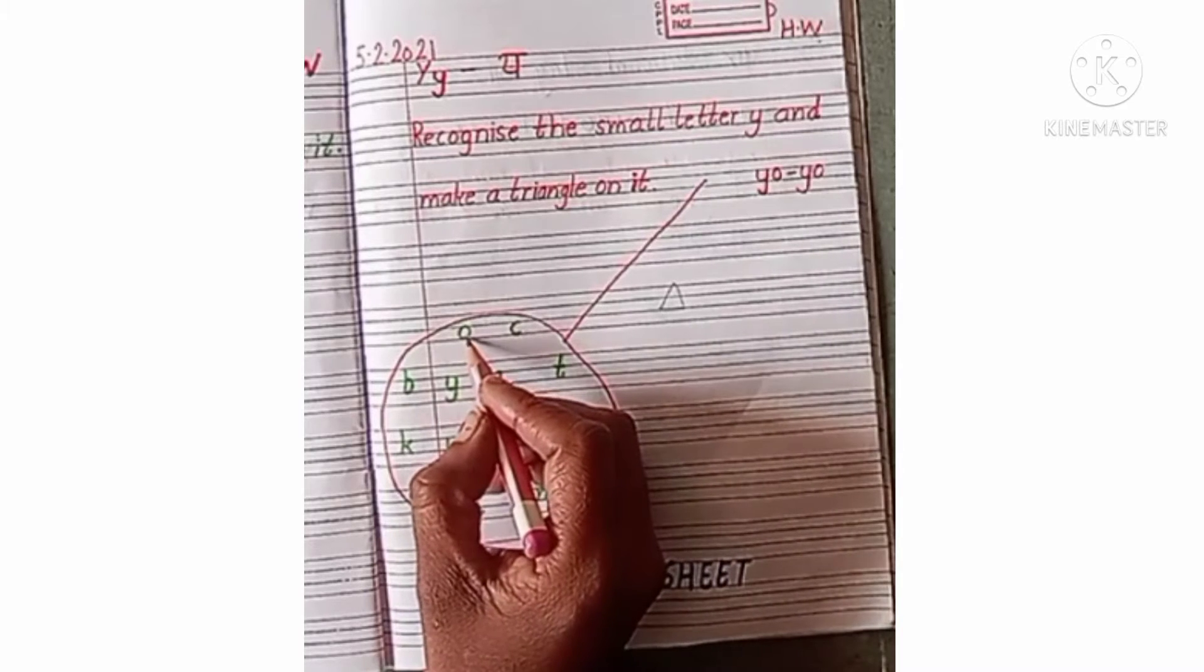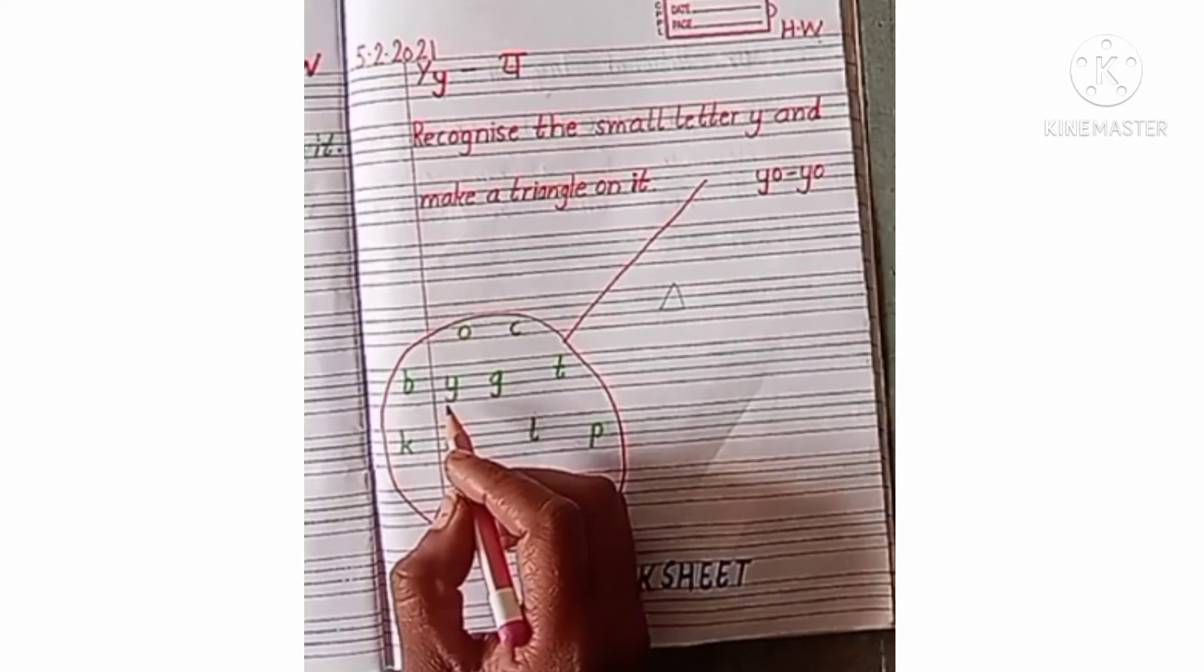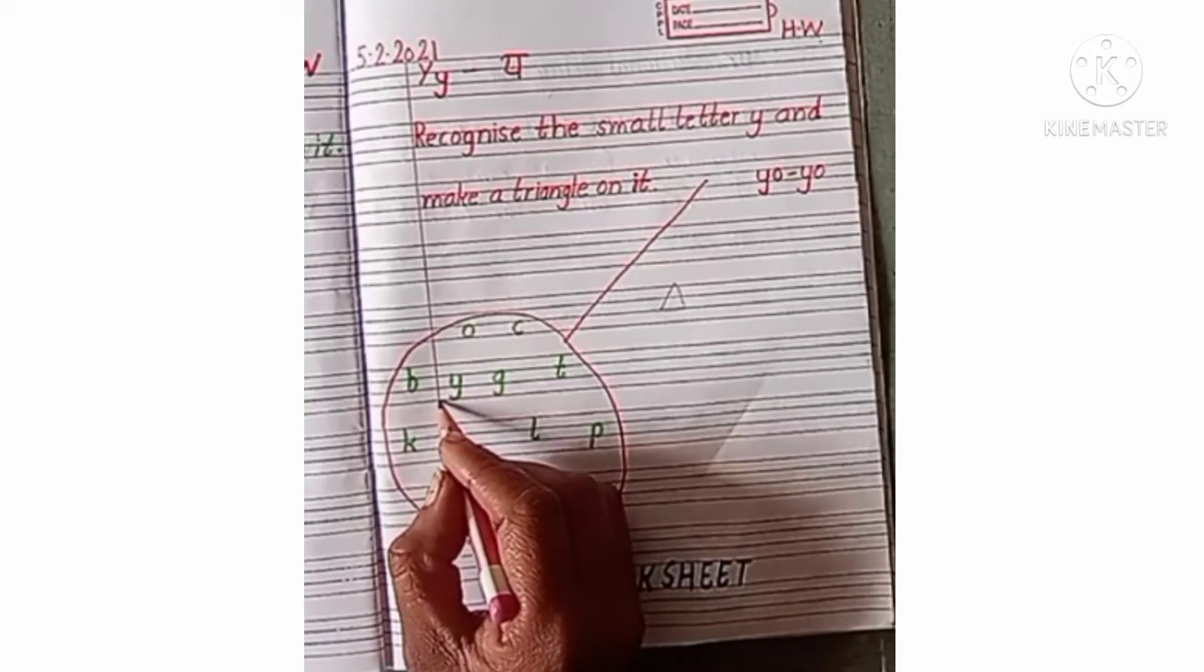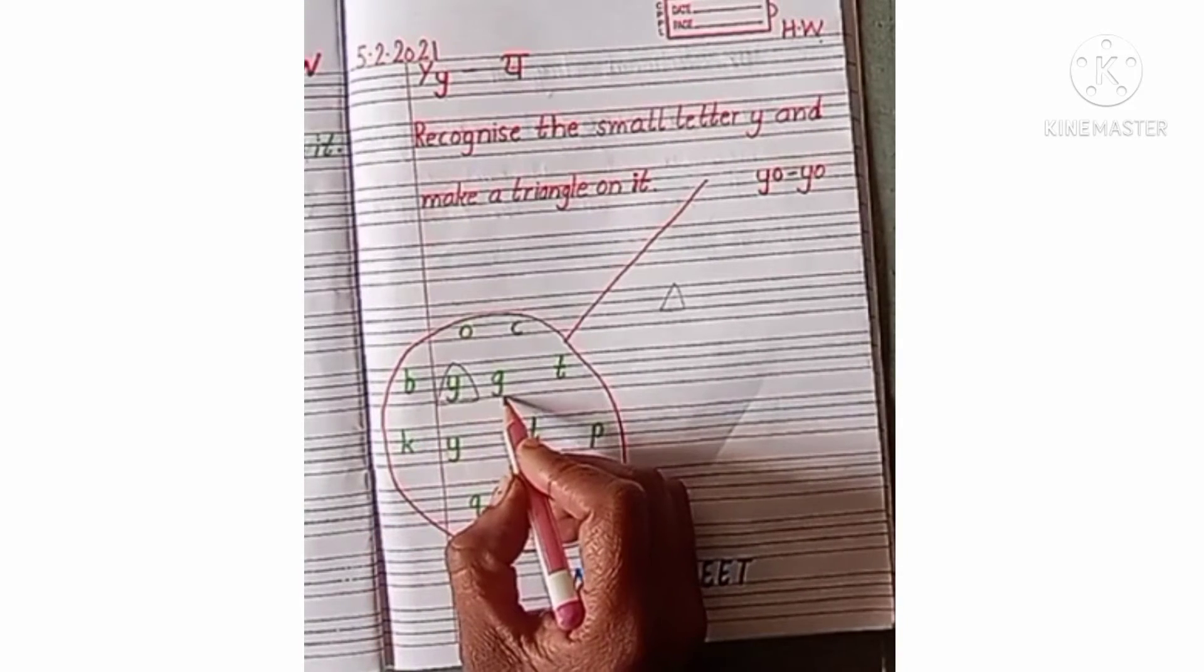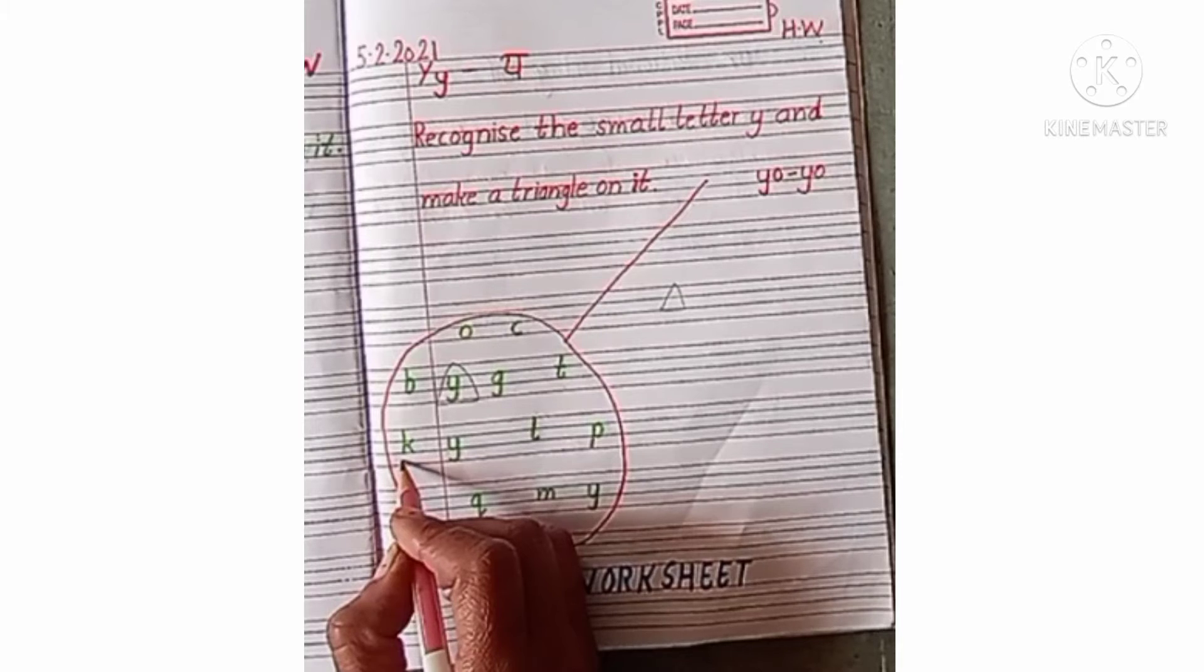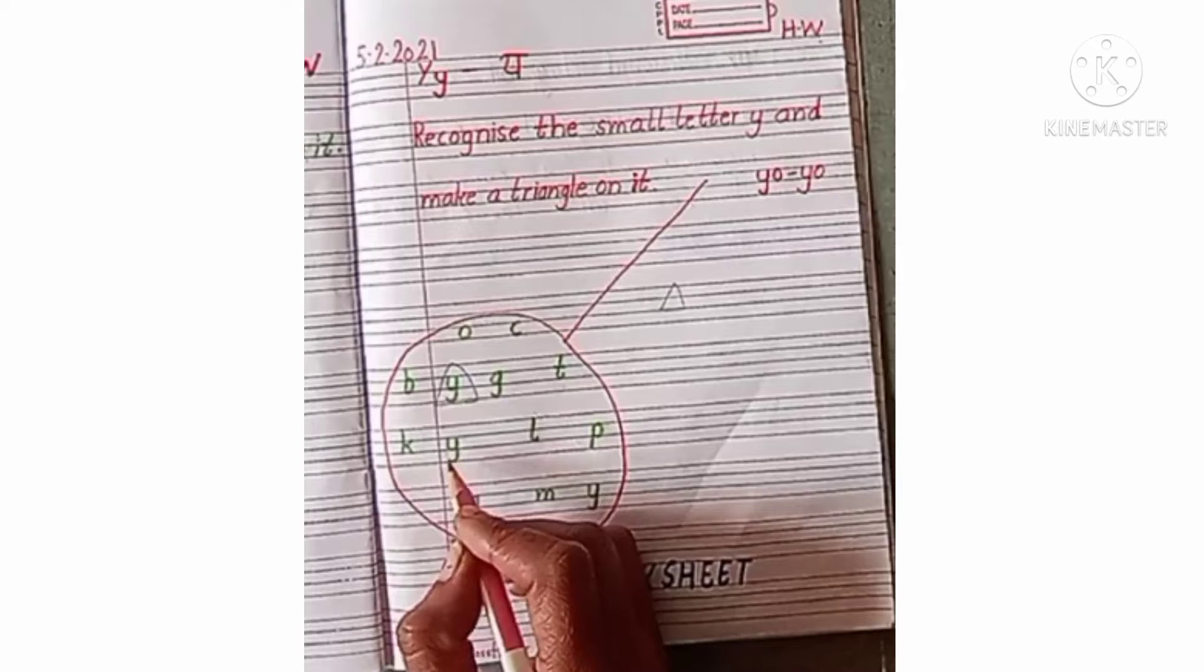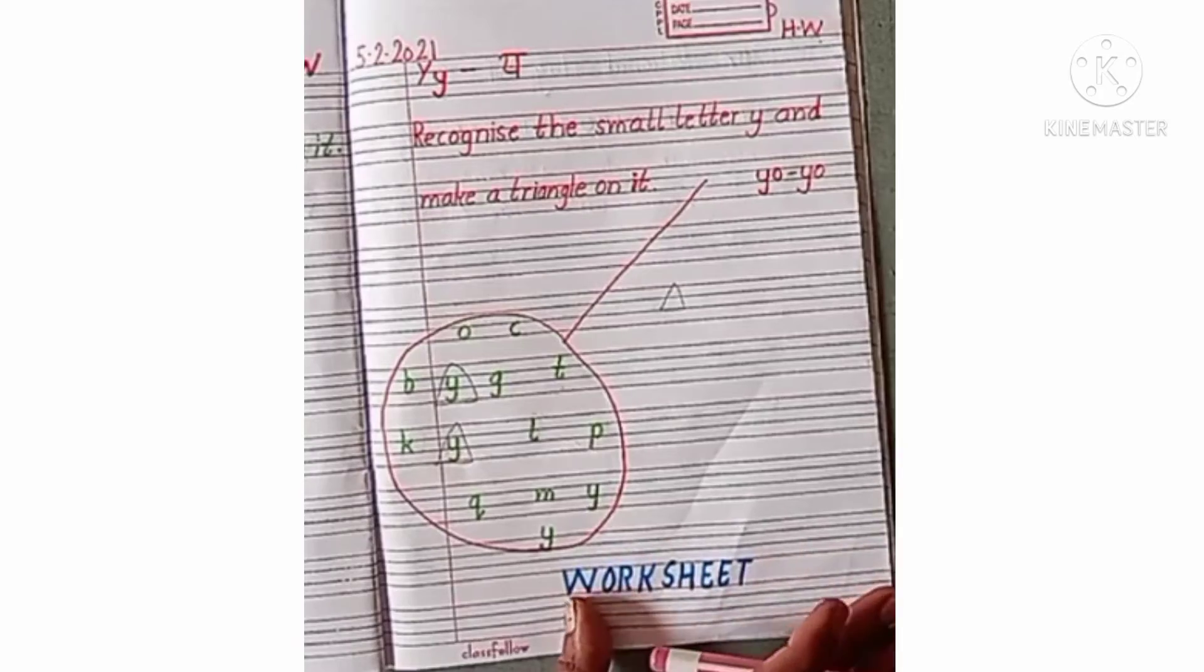Now tell me which letter is this? This is small o and which letter is this? This is small c and next letter is y here. This is small y now make a triangle on it like this. Okay which letter is this? Small g and next is small t. Which letter is this? K and which letter is this? Y here now make a triangle shape on it. Okay wait a complete this worksheet in this way.